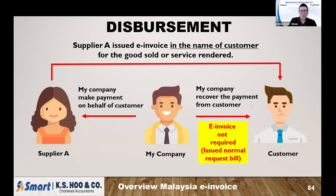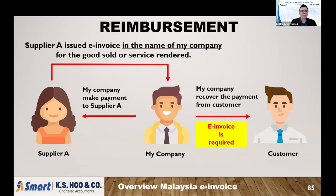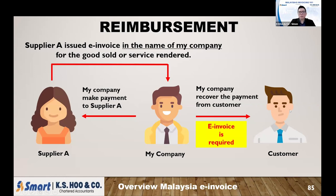An example of disbursement: your company is running an event and your customer says, 'Help me run the event, but ask all suppliers to bill back to me.' So you go meet the suppliers and ask them to issue e-invoices under your customer's name, while you pay the suppliers on their behalf. When you want to recover the money, no additional e-invoice is needed — just provide the customer with a document list and attach all the e-invoices already issued in their name. For reimbursement: same event scenario, but the customer says all expenses should come under your company name. You ask suppliers to issue e-invoices under your company name, you pay them, and then when recovering from the customer, you issue a new e-invoice to your customer. That's the key difference between disbursement and reimbursement.